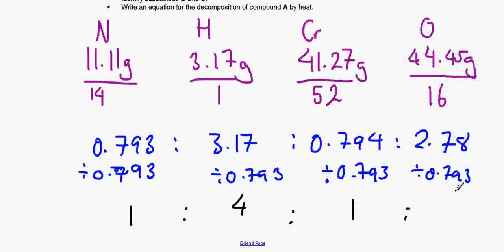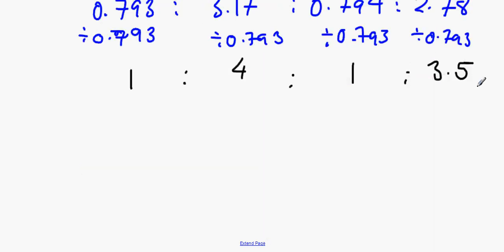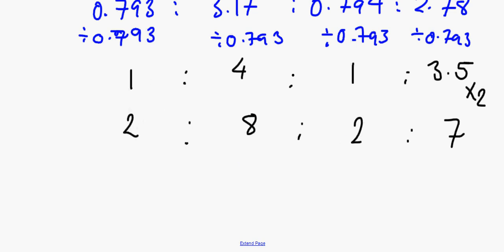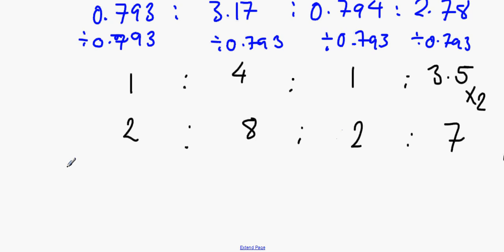The oxygen ratio comes out very close to 3.5. It's important that you don't round up numbers which are in the middle — if you get 3.7, I would suggest you don't round it up as you might mess everything up. We can't have 3.5 moles of oxygen, so we multiply everything by 2 to get whole numbers: nitrogen becomes 2, hydrogen becomes 8, chromium becomes 2, and oxygen becomes 7. So the empirical formula is N2H8Cr2O7.